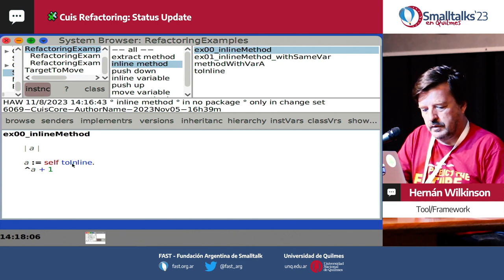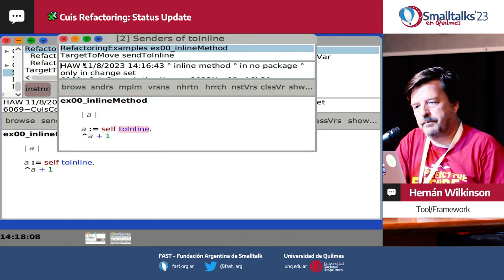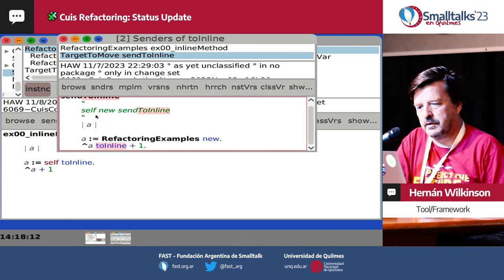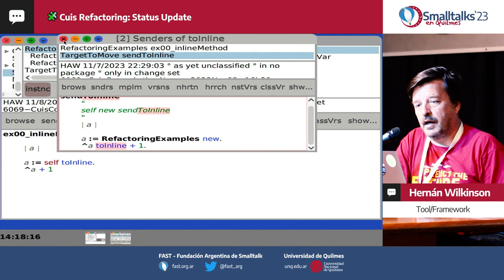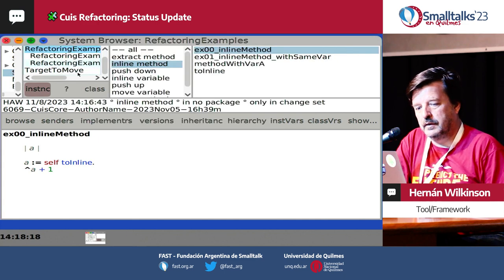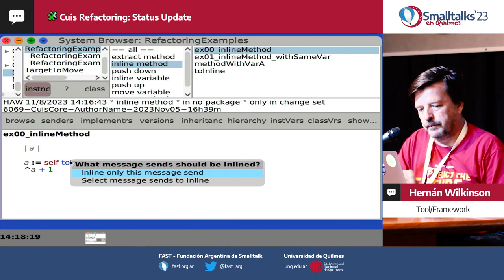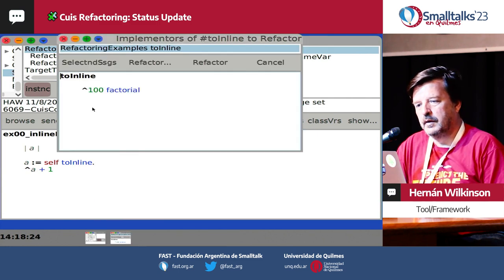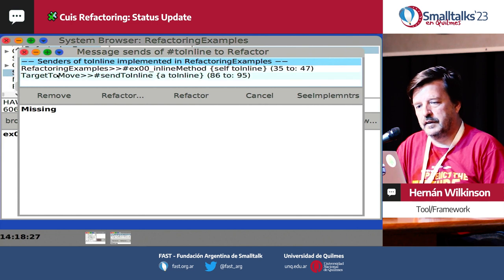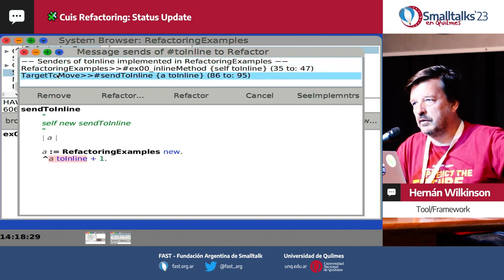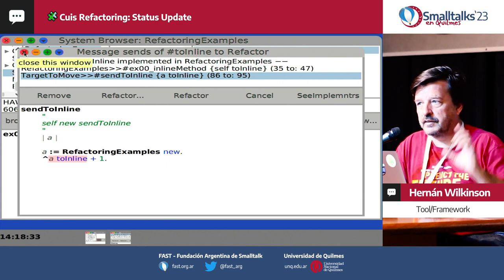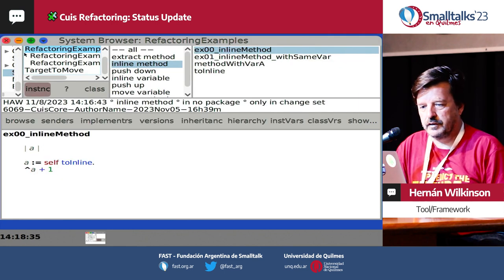But what happens if now we run this method? If we run the method, we have type information. And now if we try to do the inline with actual scope, it will show that this one is sure to do the refactor. That's the difference.